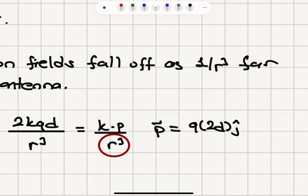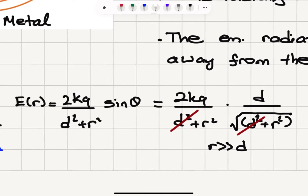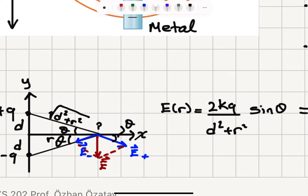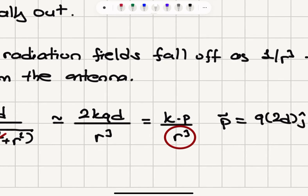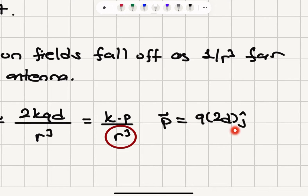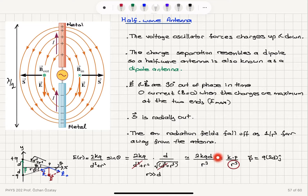The electric dipole moment vector p = q·(2d) ĵ points from −q to +q. The magnitude is one of the charges multiplied by the distance between them, 2d. Therefore, the magnitude of the electric field is k times p over r³. So the electromagnetic radiation falls off as 1/r³ far away from the antenna.